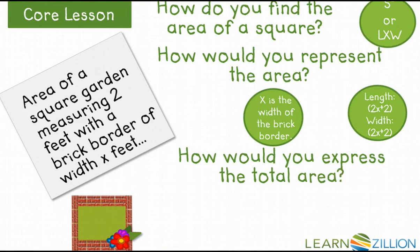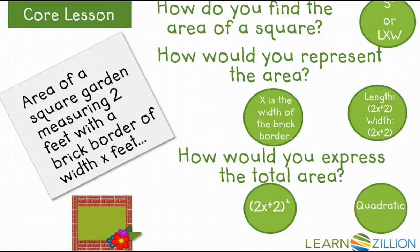So how would you express the total area? Because the length and the width are the exact same, we're going to multiply them together. So it's 2x plus 2 times 2x plus 2, or a shortened way of writing that is 2x plus 2 to the second power. And that is a quadratic.